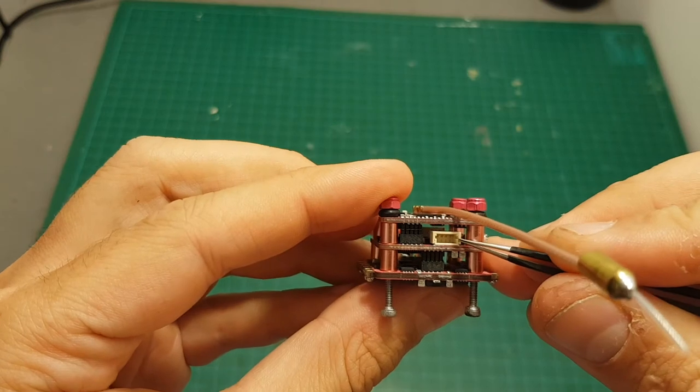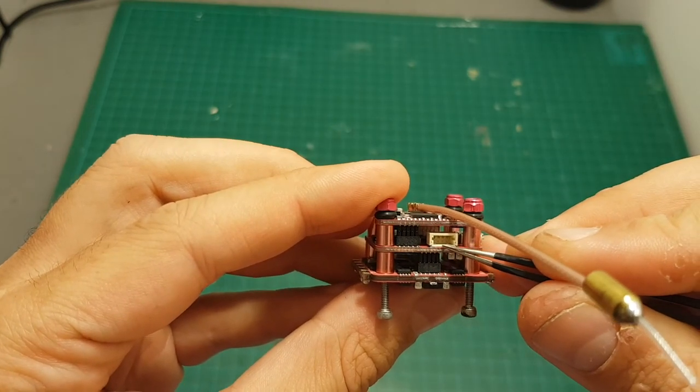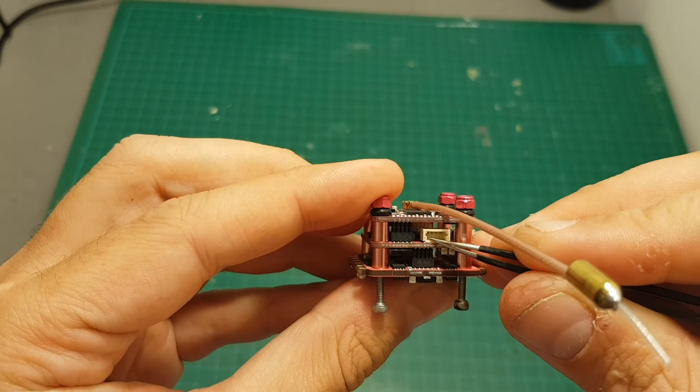On the front we have the last connector which is the camera connector. The right pin is the 5 volt, then ground, video and audio connector.